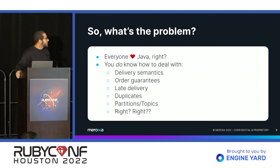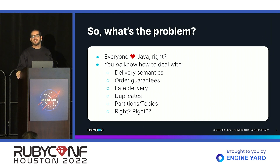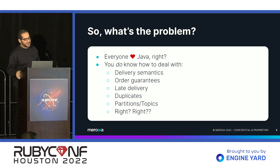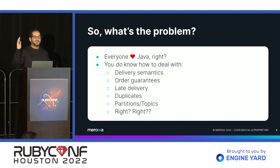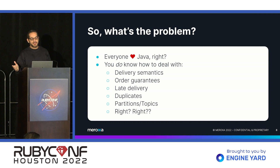So what is the problem with stream processing right now? Essentially, everyone here — I assume — loves Java. It's your favorite language. Clearly, Ruby Conference must love Java. Nothing wrong with Java, but if you do enough stream processing, you're going to end up with Java somewhere. Kafka is written in Java, Kafka Connect is Java, Kafka Streams is Java, Pulsar is Java, Spark is Java, Flink is Java. Java is everywhere. That's great if you love Java — if you don't, then that kind of sucks.